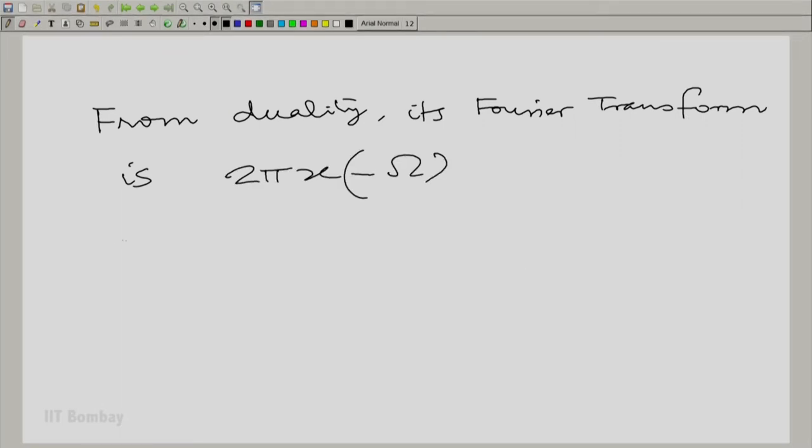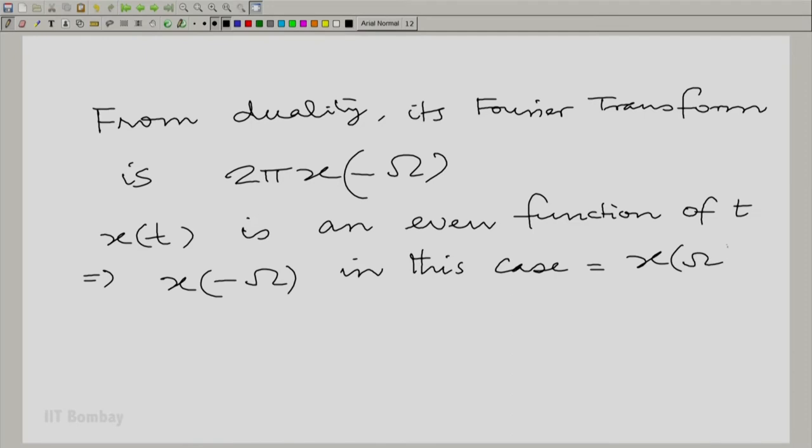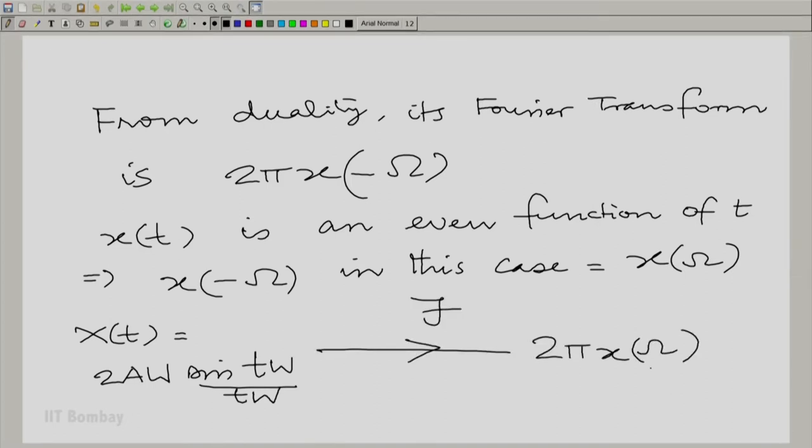From duality, its Fourier transform is 2π·x evaluated at -ω. Now, x(t) is an even function of t. Therefore, x(-ω) in this case equals x(ω). Therefore, the Fourier transform of X(t) described by 2aW·sin(tW)/(tW) is 2π·x(ω) itself - essentially the same kind of Fourier transform, a rectangular pulse in the frequency domain, but with a scaling, a multiplication by 2π.